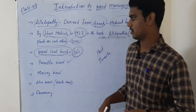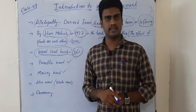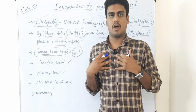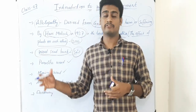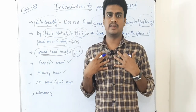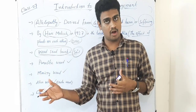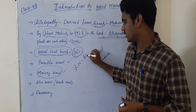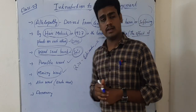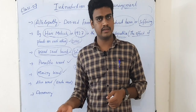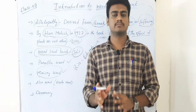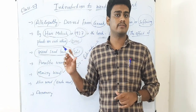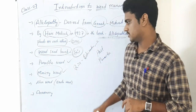A mimicry weed is a weed that resembles a crop plant so closely that it is difficult to differentiate between the two. For example, in a rice crop, the mimicry weed is Echinochloa colona, and in wheat, it is Phalaris minor. These weeds resemble the crop, and we can only differentiate them from the crop plant when they produce their reproductive parts.